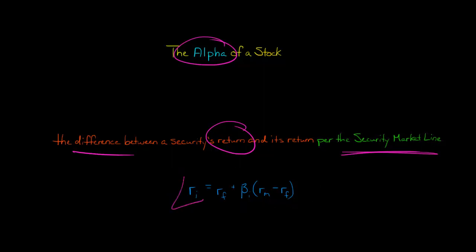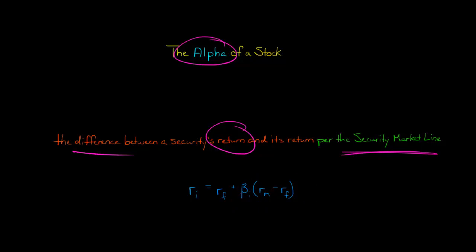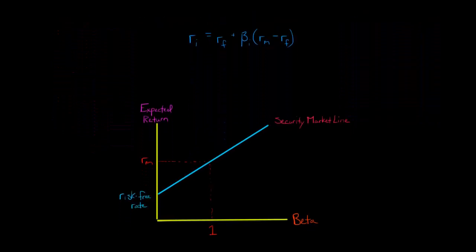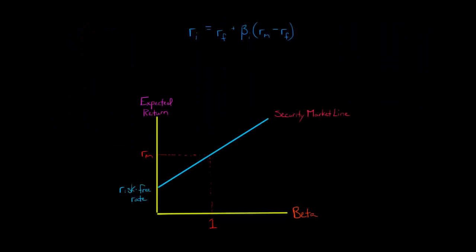With the CAPM, the expected return of security i is equal to the risk-free rate of return plus beta for that security times the market risk premium. We can look at what the beta is for different securities and what the expected return is, plot that, and that gives us a line called the security market line. We've talked about that in different videos, so I won't go on about it too much here.